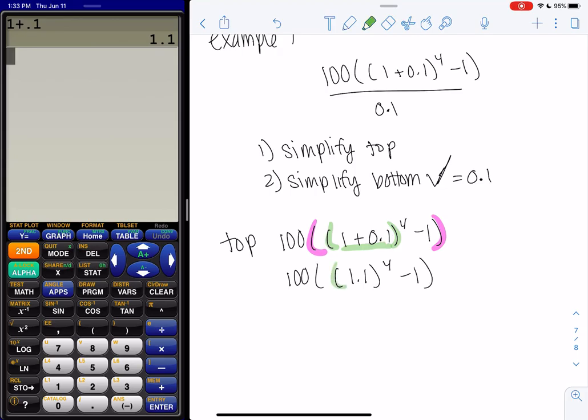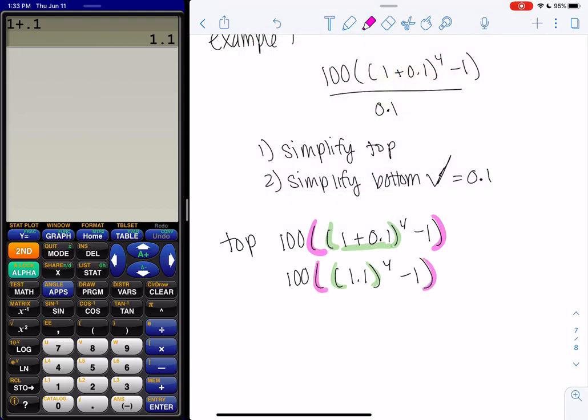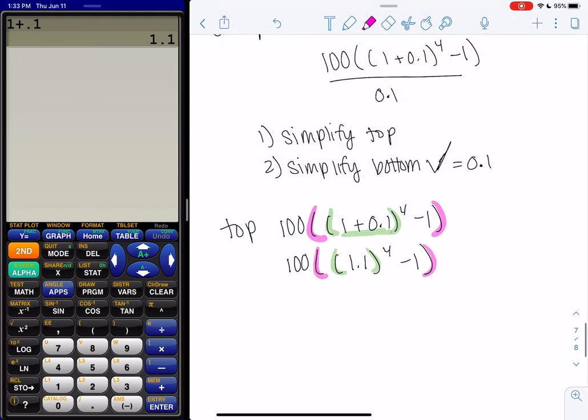And I haven't touched anything else. And then I'm going to use the pink parentheses, but I still have to simplify inside. So we're going to do 1.1 to the fourth power. Get rid of that exponent.